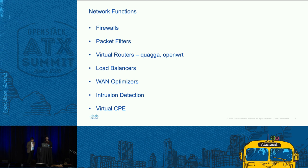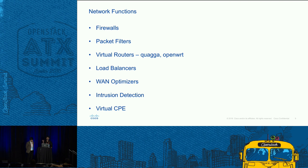Some sample network functions include firewalls, packet filters, virtual routers, load balancers, WAN optimizers, and intrusion detection. Depending on whether the customer wants to route their packet through these functions, it helps to be able to spin them up on demand depending on the type of application. You can offer firewall as a service or intrusion detection as a service, turning them on on demand. For example, in video streaming you might not want to put traffic through all of them — a WAN optimizer would be good because it would accelerate packet transfer.